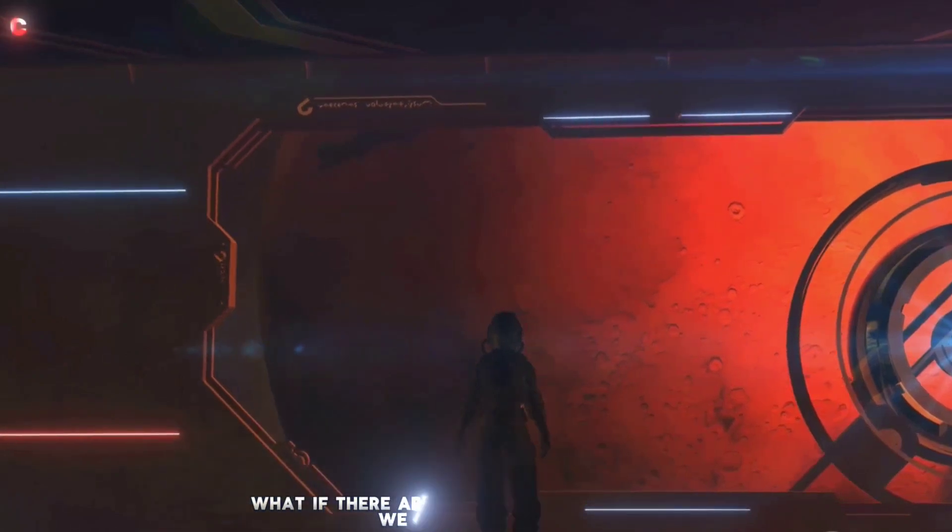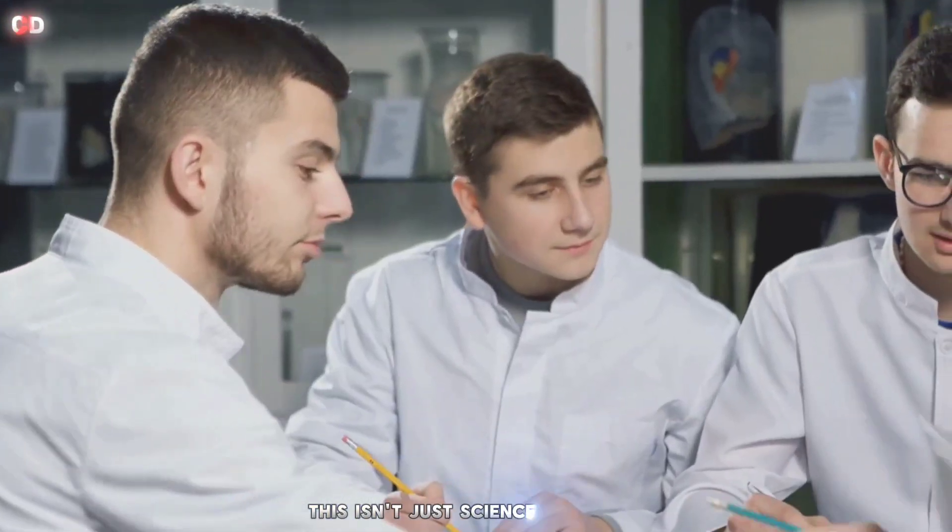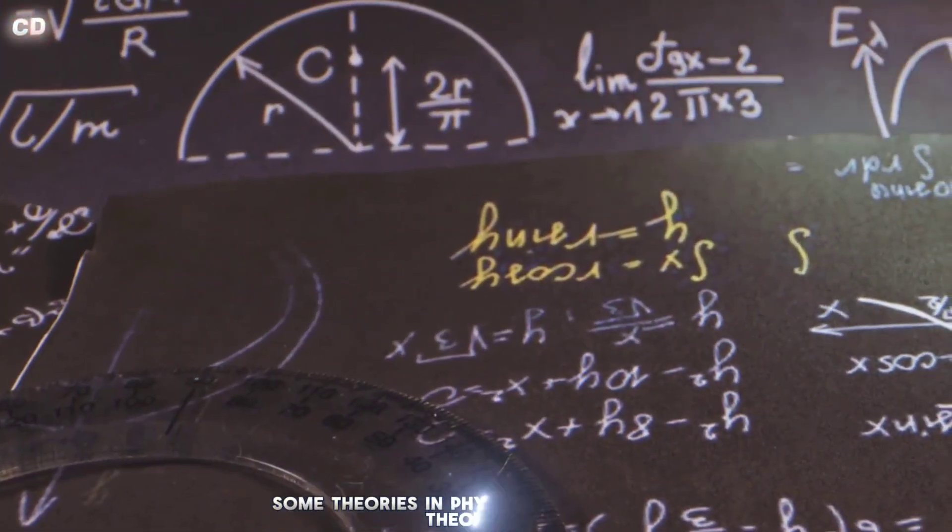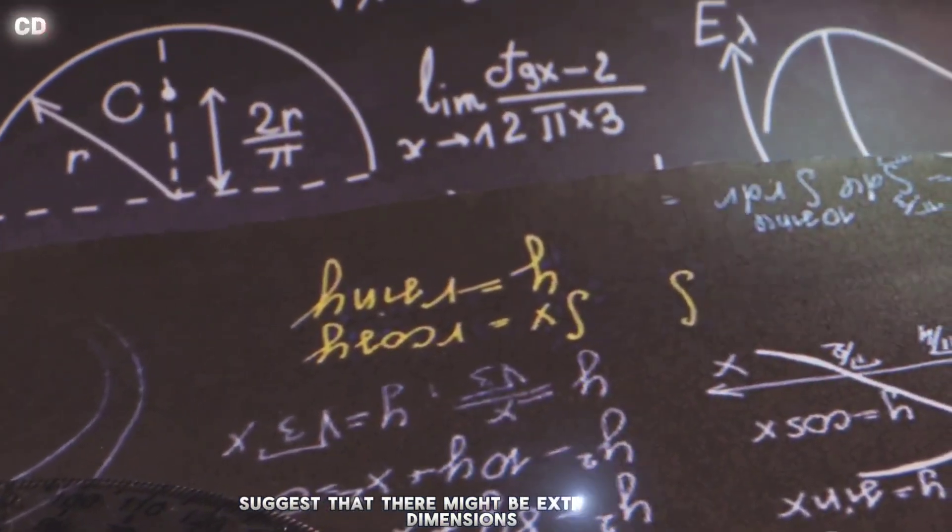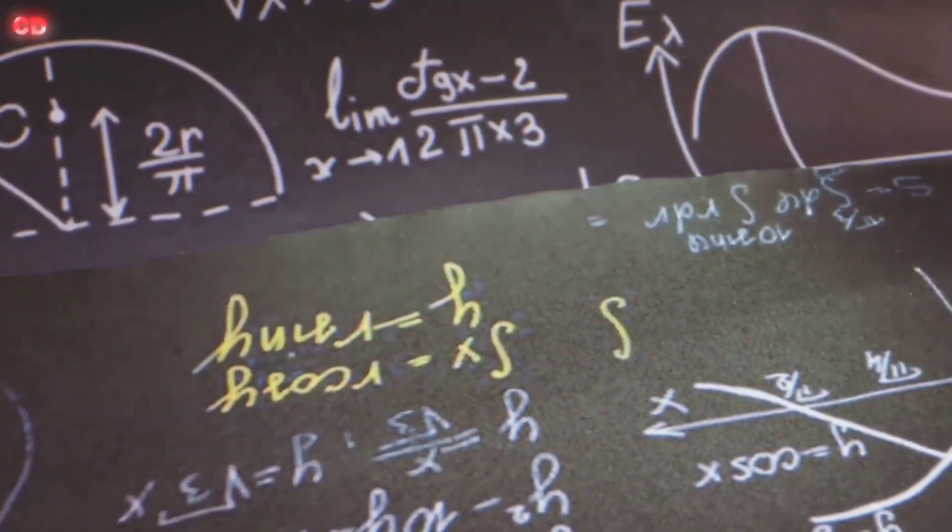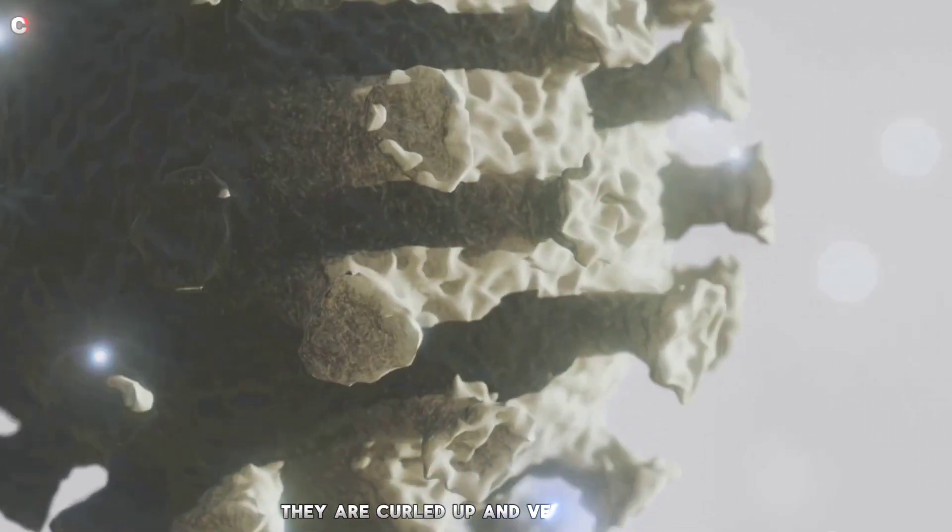But what if there are more dimensions than we can perceive? This isn't just science fiction. Some theories in physics, like string theory, suggest that there might be extra spatial dimensions. These dimensions are hidden from our view. They are curled up and very small.